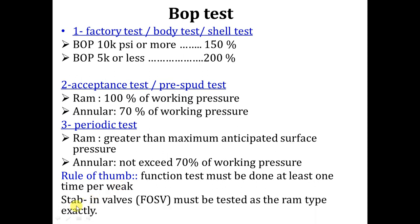Number four, all steps involving full-opening safety valves or IBOPs must be tested the same as the RAM type — exactly like the RAM. So if you are at the acceptance test and you are testing the RAM at 100% of the working pressure, you have to test the full-opening safety valves at 100% as well. And take care: all tests for the BOP must be done from below, from the direction of the flow — not from above.